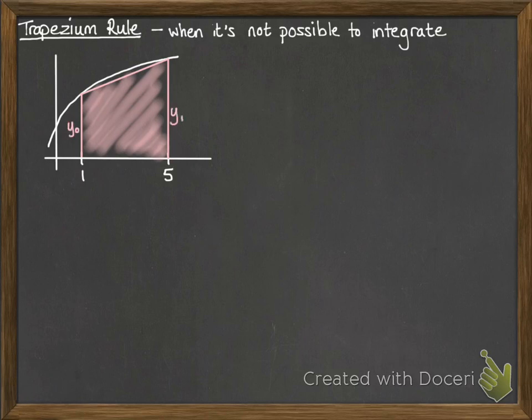So we'd find the area. We'll call the height of the curve at 1 y0, and the height of the curve at the other end y1. You'll see why we start with y0 a bit later on. So the area there, we're just using the formula for a trapezium. We add together the two parallel sides, divide by 2, and then multiply by the distance between those two parallel sides.